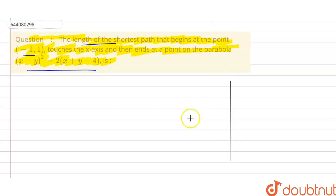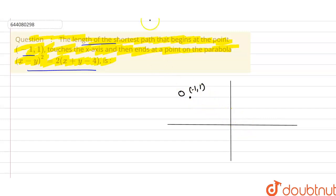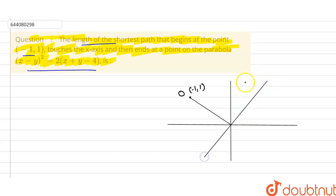This is our y-axis and this is our x-axis. The given point is (-1, 1), placed here. We place this as O. This point touches the x-axis. Now we draw our parabola: (x - y)² = 2(x + y - 4).